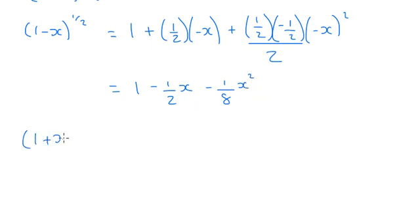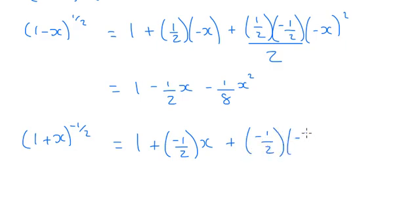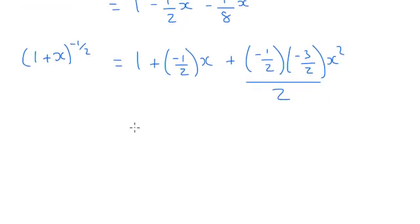The 1 plus x to the negative a half is going to be 1 again, plus negative a half x, plus negative a half times negative 3 over 2, x squared over 2. So that's going to be 1 minus a half x. This is going to be plus this time, 3 over 8 x squared.